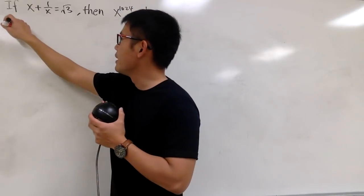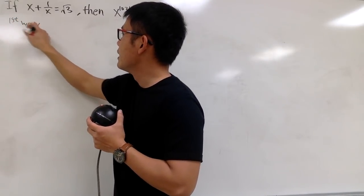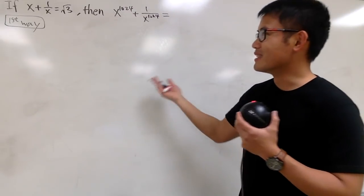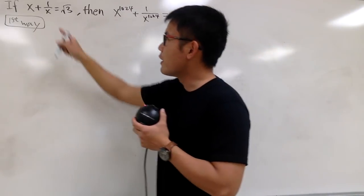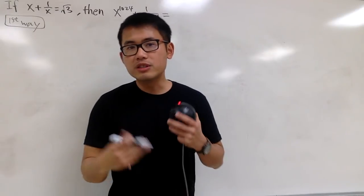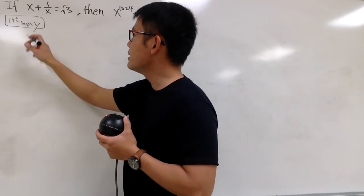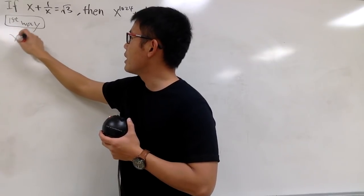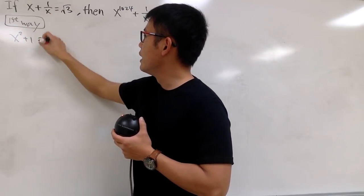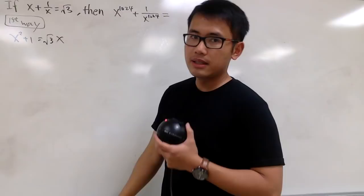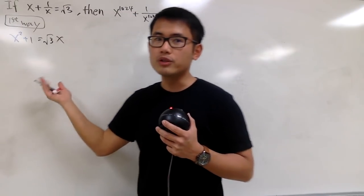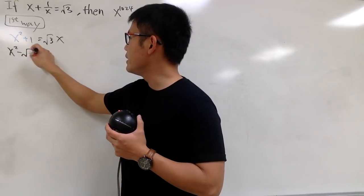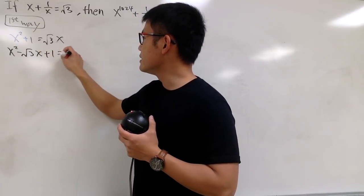Here is the first way — it's more of a trick. When I see this, I want to solve for x. Let's multiply everything by x, so we will have x squared plus 1, and that's equal to square root of 3 times x. This is a quadratic equation. Moving things to the other side: x squared minus square root of 3 times x, plus 1, equals 0.